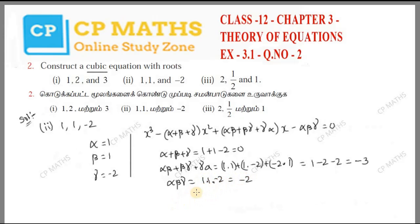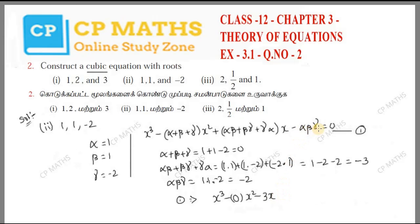Alpha beta gamma, the product of all three roots, is 1 into 1 into minus 2, so the answer is minus 2. Now substituting into the required equation: x³ minus 0·x² plus (minus 3)x minus (minus 2) equals 0.